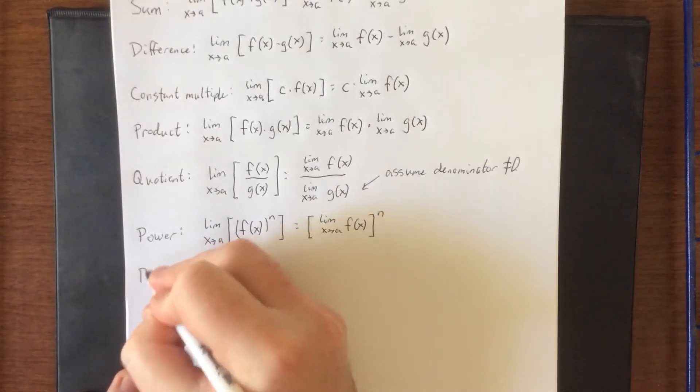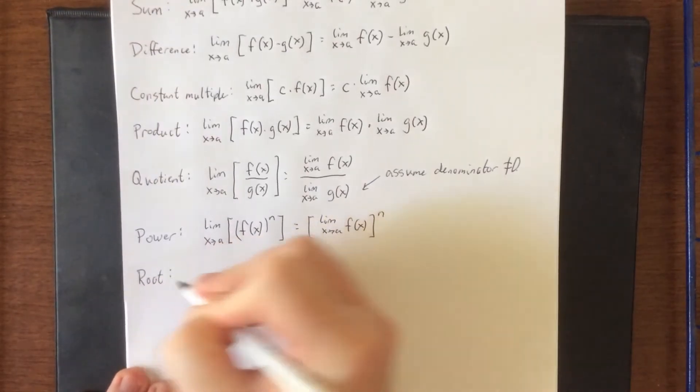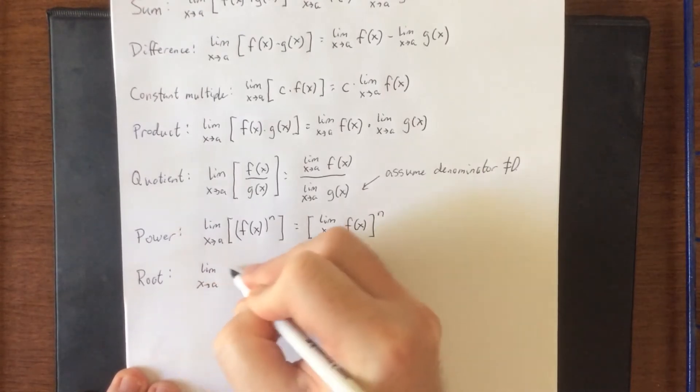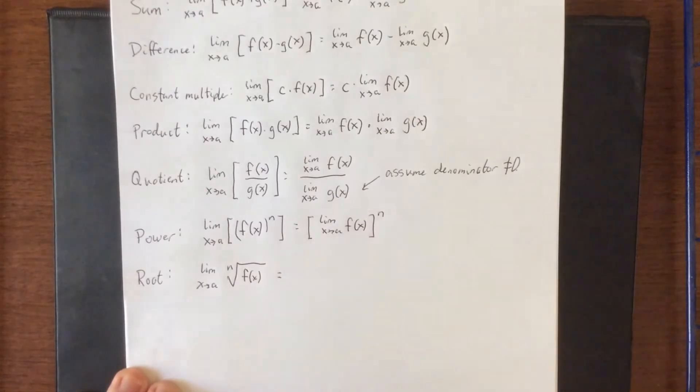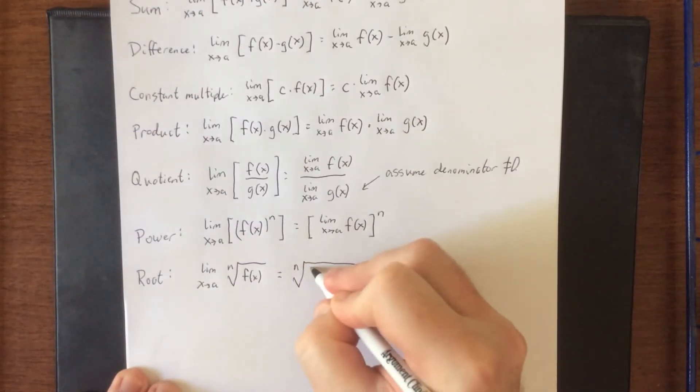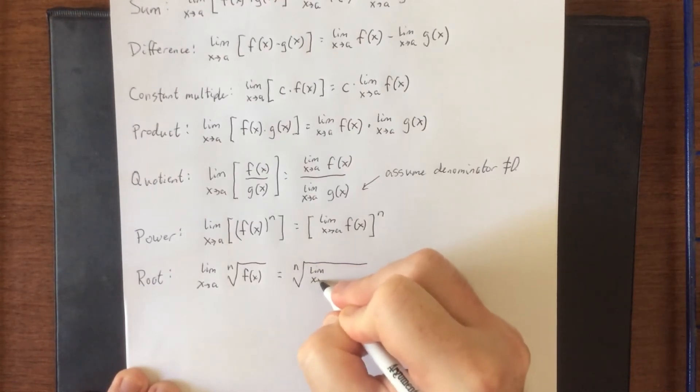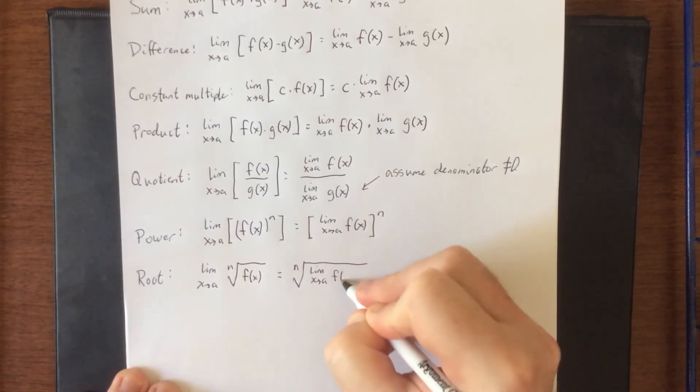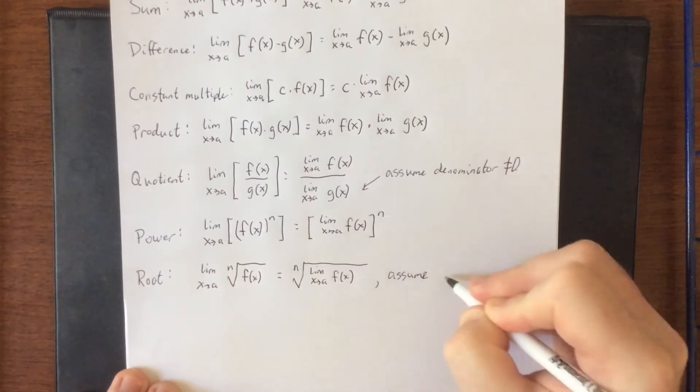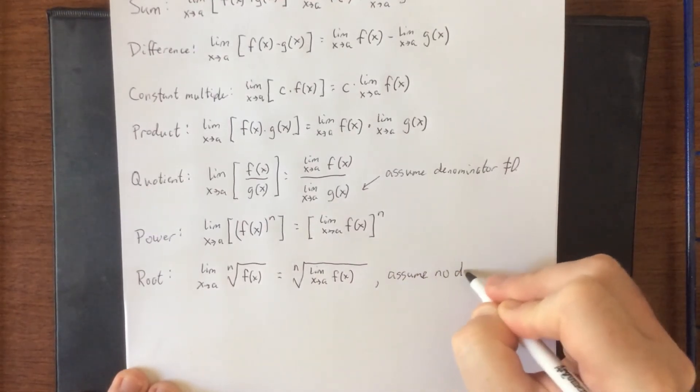And finally, the root law says that if I'm taking the limit as x approaches a of the nth root of f of x, then I am allowed to take the nth root of the limit as x approaches a of f of x.